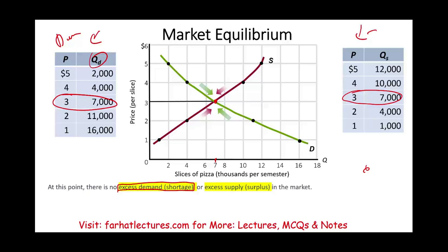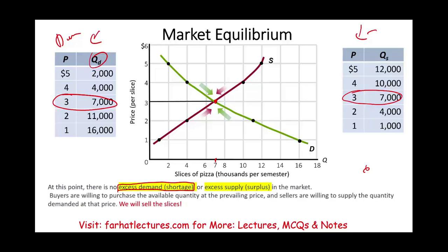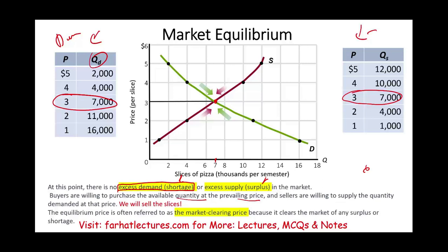The pizzerias don't have any slices to throw away and the students don't need any more. Buyers are willing to purchase the available quantity at the prevailing price and sellers are willing to sell at the demanded price. We will sell all the slices — no shortage, no surplus. The equilibrium price is also referred to as the market clearing price. It means it's going to clear all the product. You will not have any product left because the price and the quantity are the perfect combination.